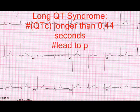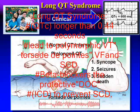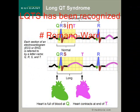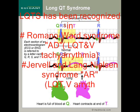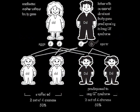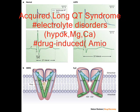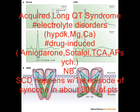Long QT syndrome is very important. It is defined as a QTc longer than 0.44 seconds, leading to polymorphic VT known as torsades de pointes, VF, and sudden cardiac death. Beta blockers are protective and ICD is used to prevent sudden cardiac death. Long QT syndrome is recognized in Romano-Ward syndrome which is autosomal dominant, and Jervell and Lange-Nielsen syndrome which is autosomal recessive, characterized by congenital deafness and arrhythmia. Acquired long QT syndrome can be caused by electrolyte disorders including hypokalemia and hypomagnesemia, and drug-induced causes.